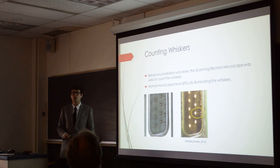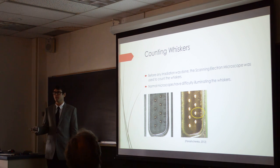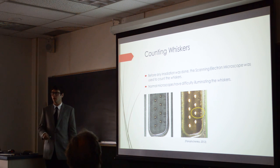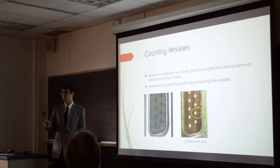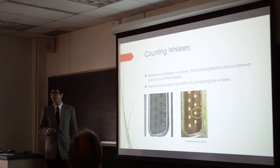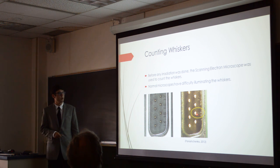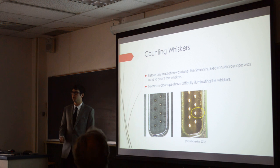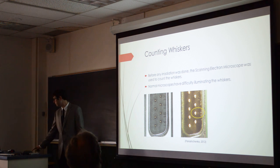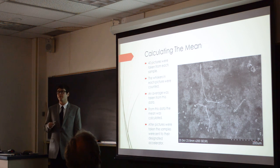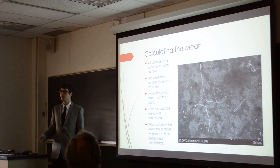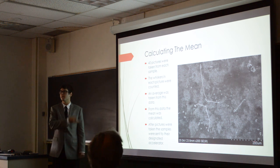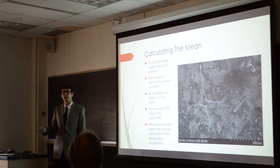Back to the physical experiment: before we could irradiate any of the samples, we needed to count the whiskers on each sample. We did that using the scanning electron microscope, because normal microscopes have difficulty illuminating whiskers with their point source lights — with light coming in from the side you might be able to illuminate a whisker, but it's just easier to use the SEM. Each sample had 40 pictures taken, I counted the whiskers, and from that I calculated a whisker density. After irradiation, samples would come back and we would repeat the process, giving us a before and after whisker density.